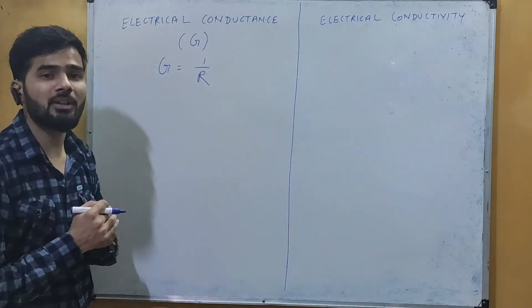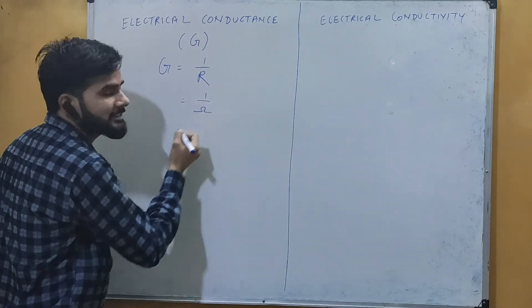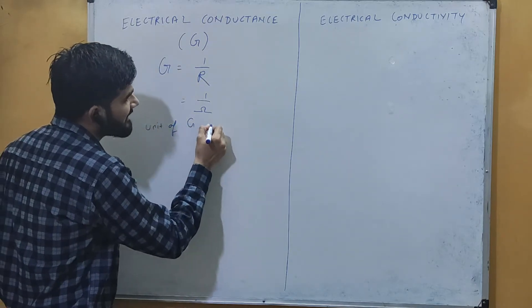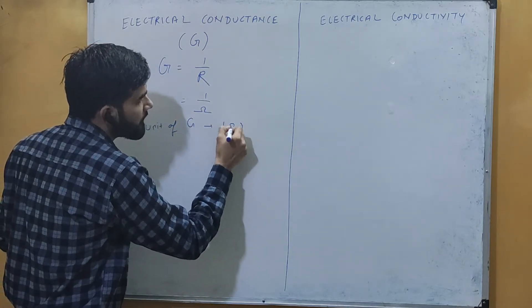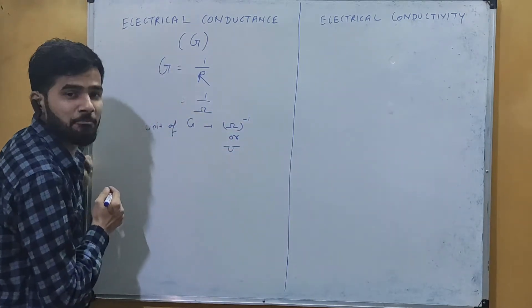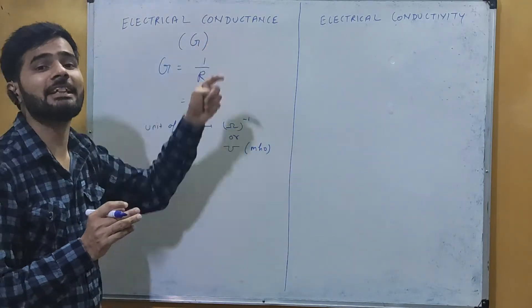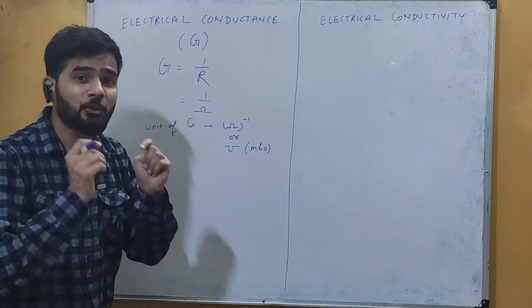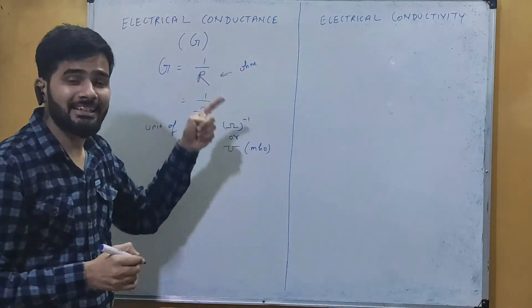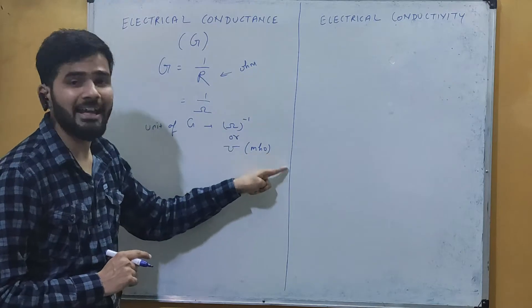Now G = 1/R, so we can write its unit. Since the unit of resistance R is ohm, the unit of G is ohm inverse. Ohm inverse is represented by a special symbol and is called mho. So the unit of conductance is mho, which is the reciprocal of ohm.